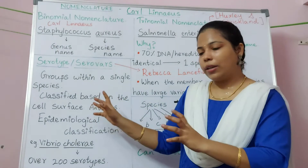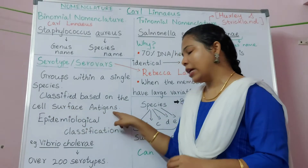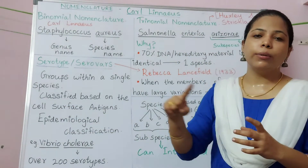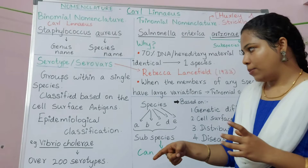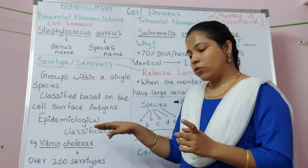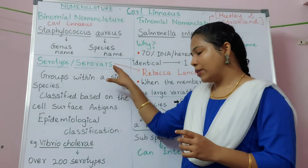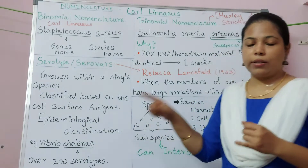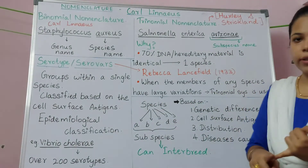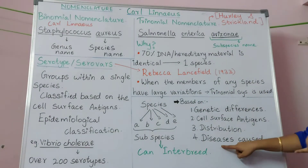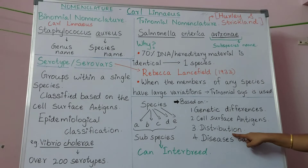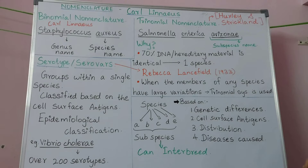Serotype classification is based on the cell surface antigens present on the surface of the microorganisms. It is also based on epidemiological classification — that is, classification based on the incidence of diseases caused by the organisms and the distribution of the organisms in different geographical locations.